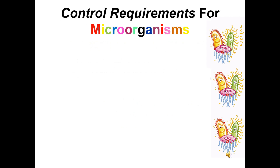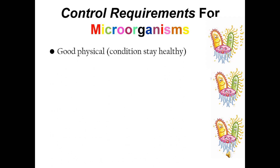Now let's talk about control requirements for microorganisms. To control their spread and growth, it's important to focus on key requirements. First, good physical health: maintaining a strong immune system through healthy habits helps the body resist infections. Second, good emotional state: stress can weaken the immune system, making it easier for microorganisms to take hold, so managing emotions is key to overall health.